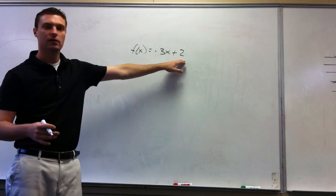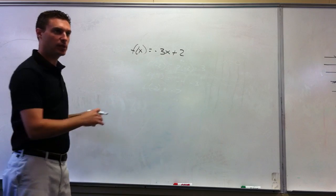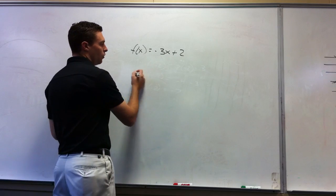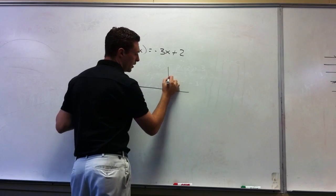So this would be your y-intercept and this would be your slope. y equals mx plus b. So we can graph this. If my y-intercept is 2, plot that.